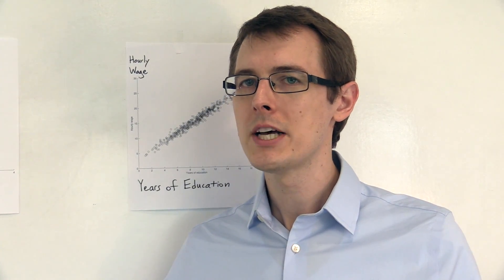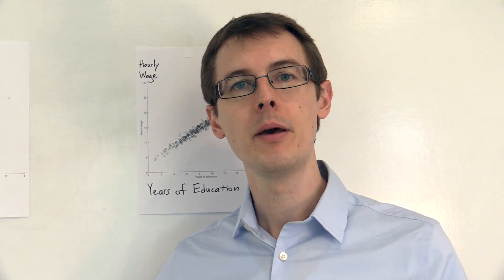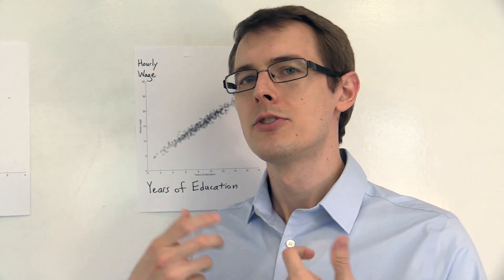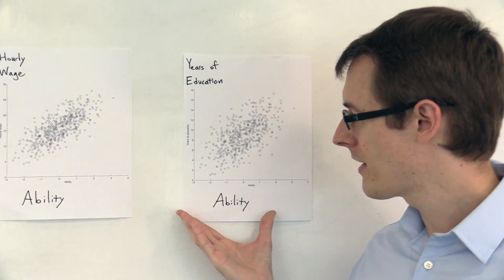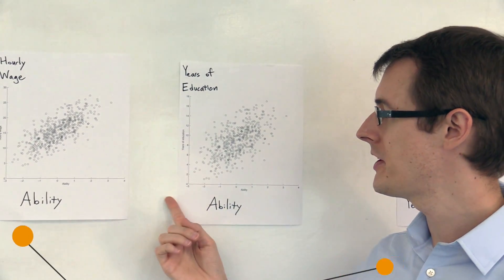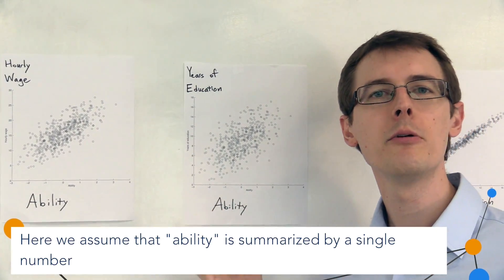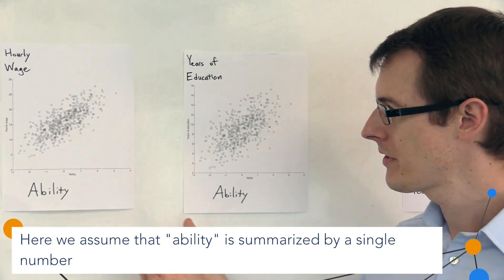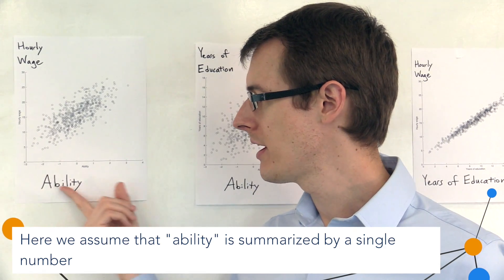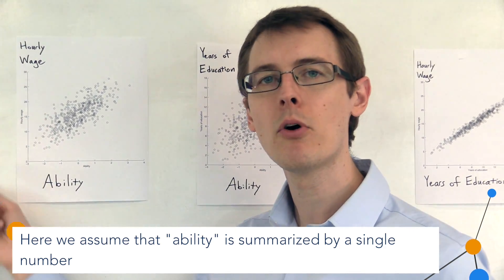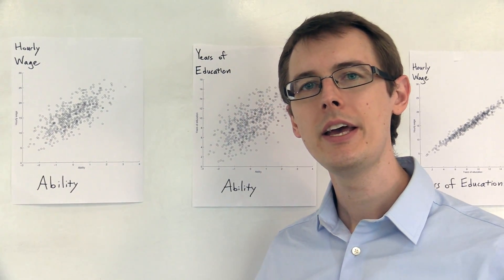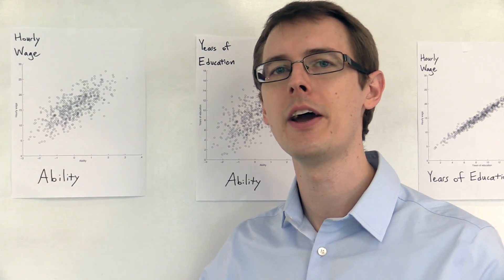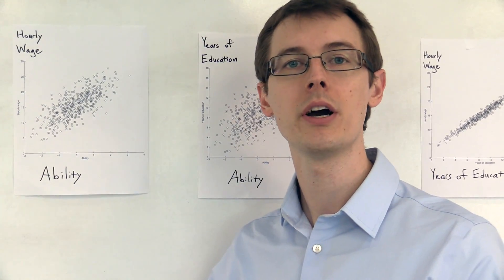What's one possible unobserved confounder? Well, maybe your innate ability deep down inside you. I've plotted ability versus years of education, and people with higher ability tend to get more education — seems plausible. Maybe people with higher ability also tend to make more money, because their ability, independent of how much school they have, directly affects how effective they are on their job and makes them more productive.